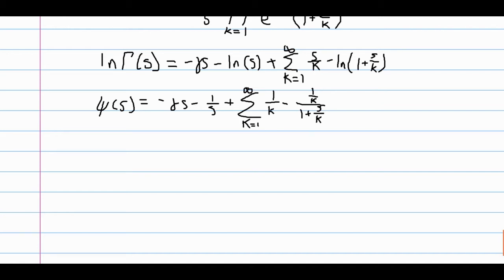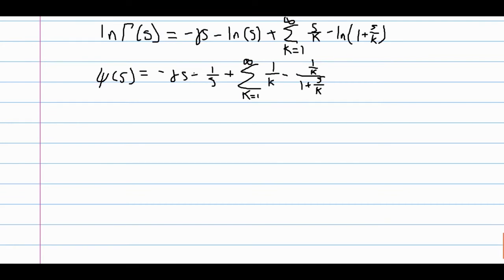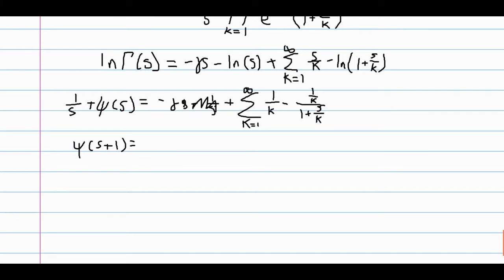So I'll fix that in the next line. But now, if we add psi of s plus 1 to both sides, then this becomes psi of s plus 1 is equal to, and I'm sorry, this should just be negative gamma. Yeah. And then the sum becomes the infinite sum of 1 over k minus 1 over k plus s.